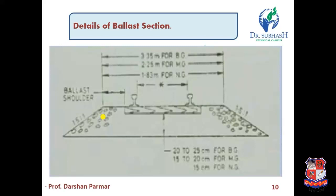In this figure, we have details of the ballast section. The width for broad gauge is 3.35 m, for meter gauge it is 2.25 m, and for narrow gauge it is 1.83 m.